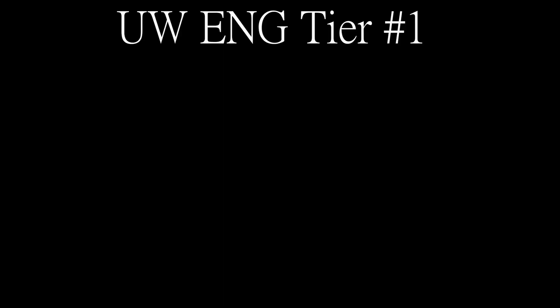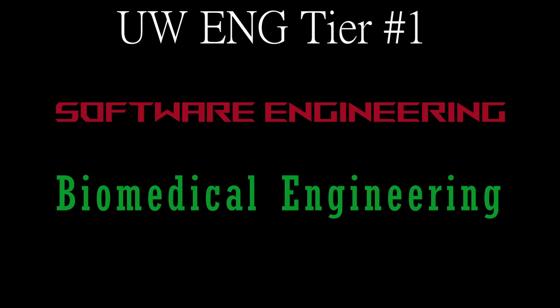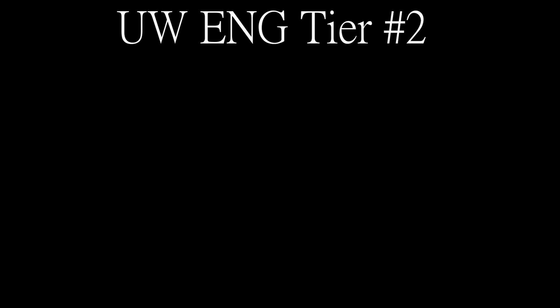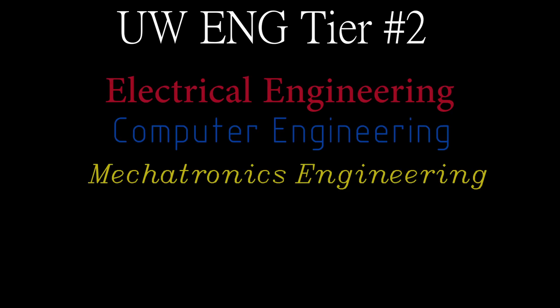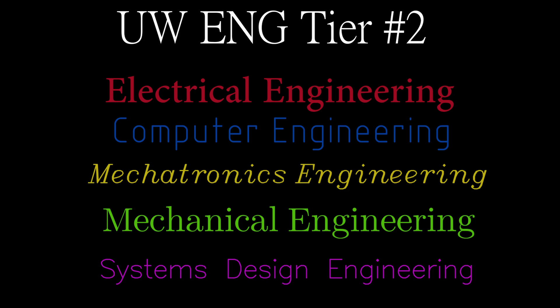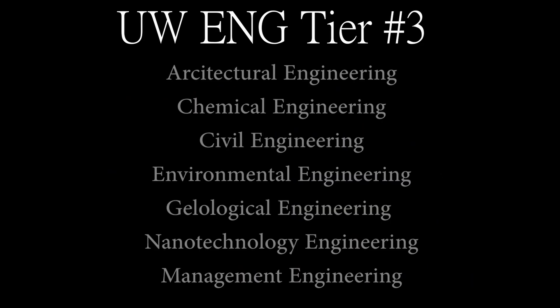There are three tiers when it comes to the different engineering programs at Waterloo. It doesn't necessarily mean they are ranking the best type of engineering, but it is a way for admissions to categorize different programs by their averages each year. Tier one consists of software engineering and biomedical engineering. Tier two is electrical, computer, mechatronics, mechanical, and systems. Tier three is everything else — architectural, geological, environmental, and so on.